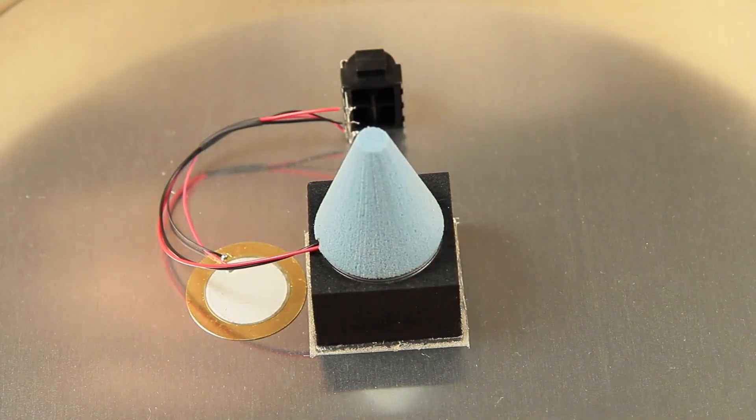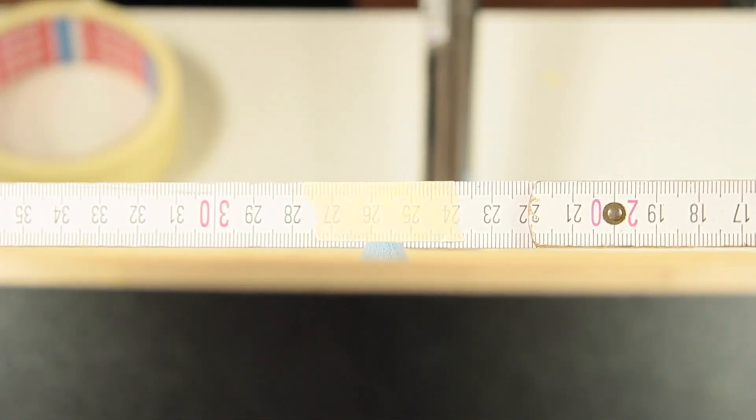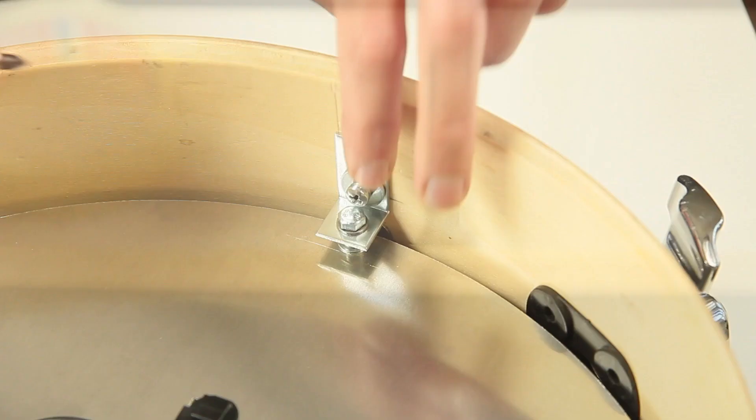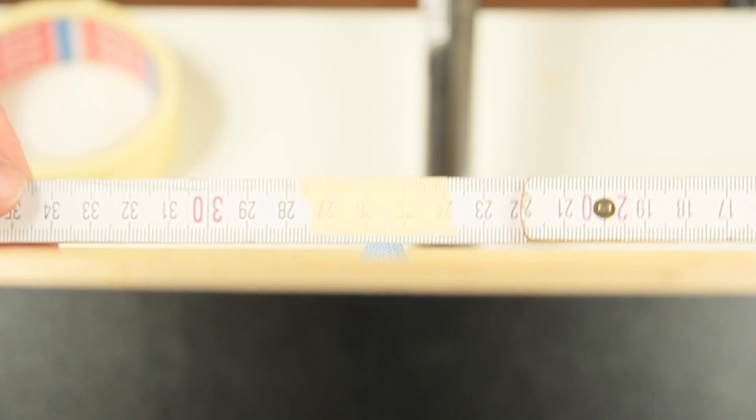The top of the cone has to be 1.5mm higher than the bearing edge of the drum. The sticky tape is the marker. The height can be adjusted by moving the angles up or down through the slotted holes.